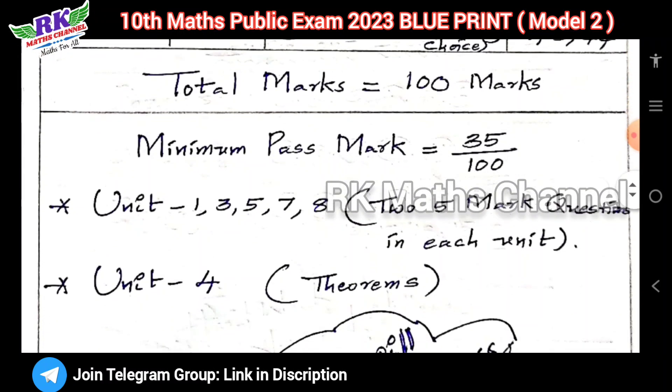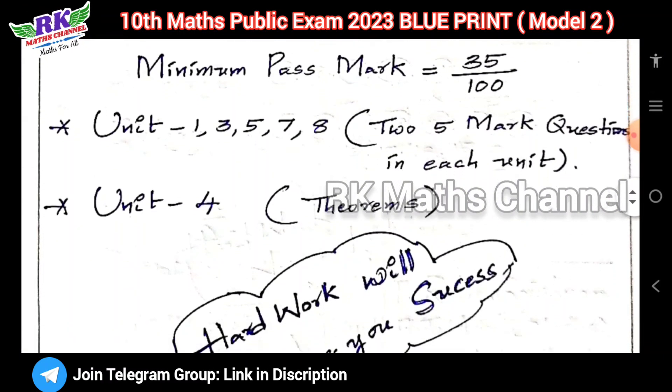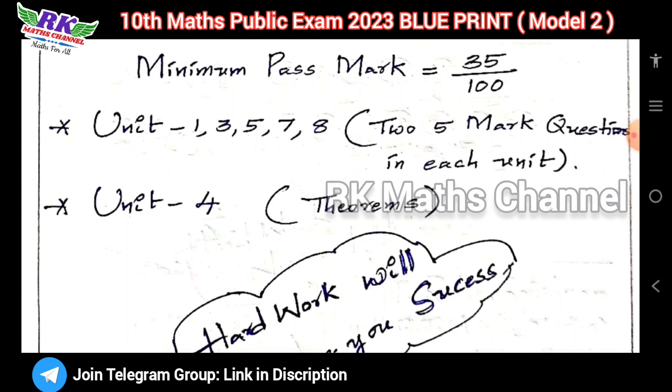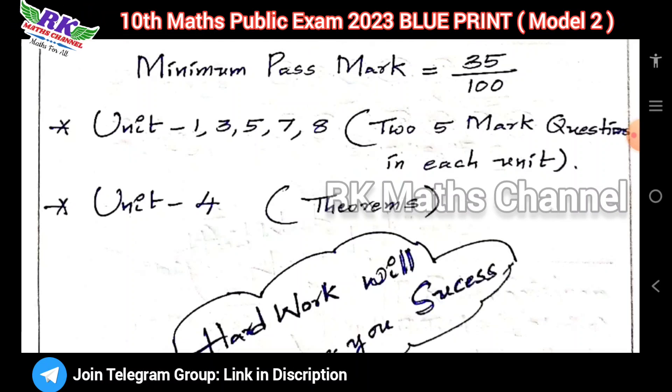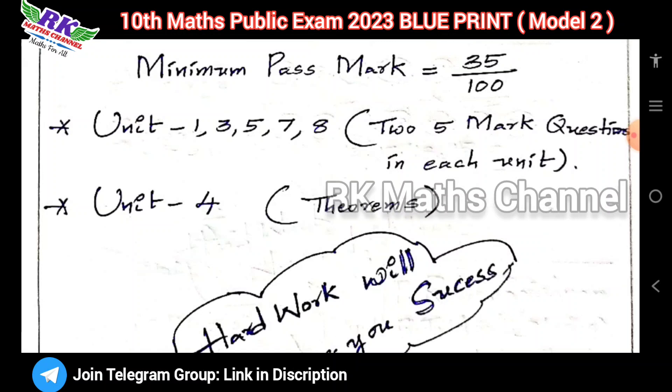Minimum pass mark is 35 marks. The important units are units 1, 3, 5, 7, and 8. Each unit has 2 questions of 5 marks each.